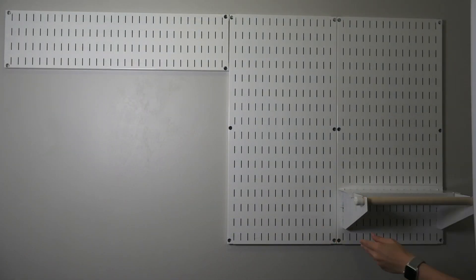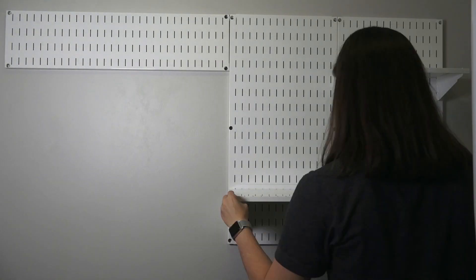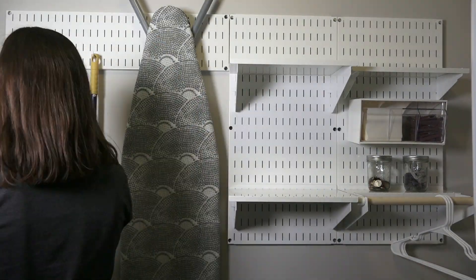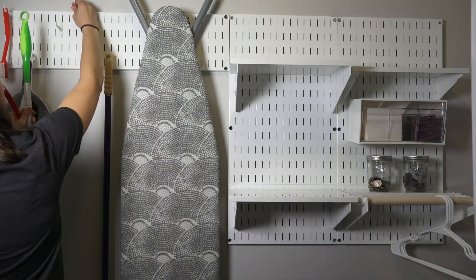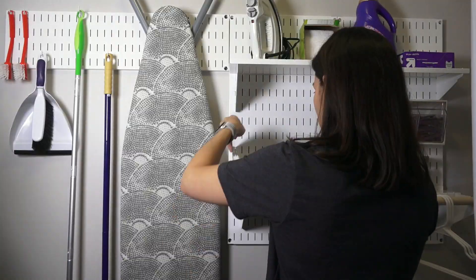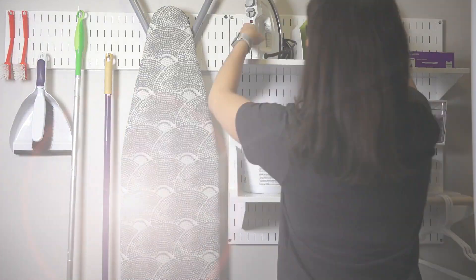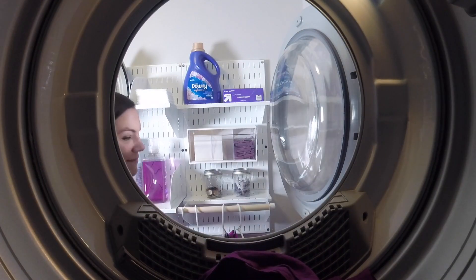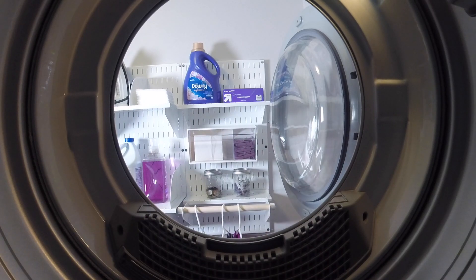Now the fun part. We decided on the best location for the included shelves and hooks. And now it's time to try it out. Here you can see the dryer opens perfectly, and I have plenty of space to hang clothes and get supplies for the washer.